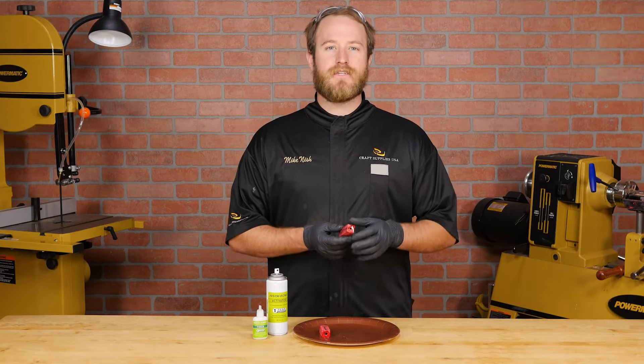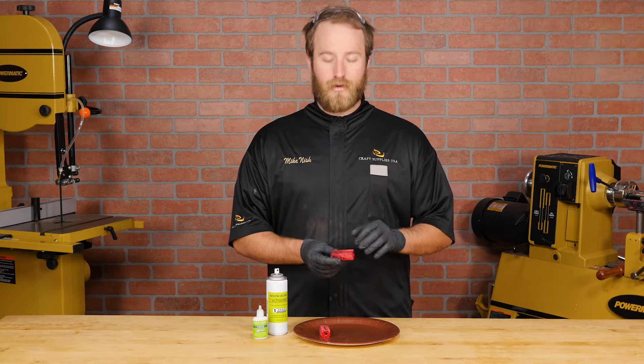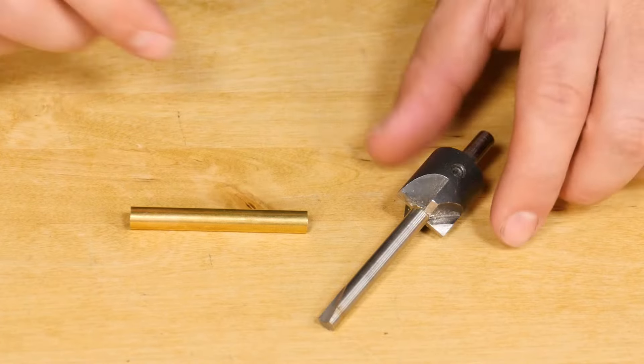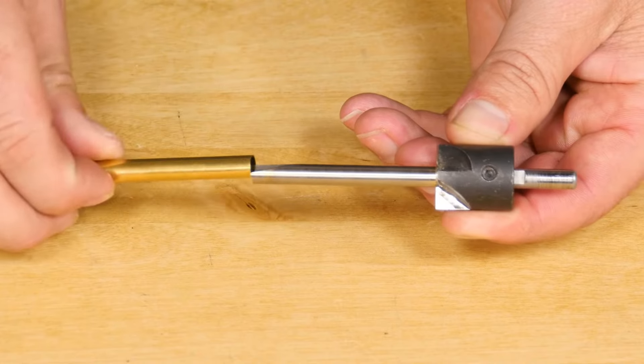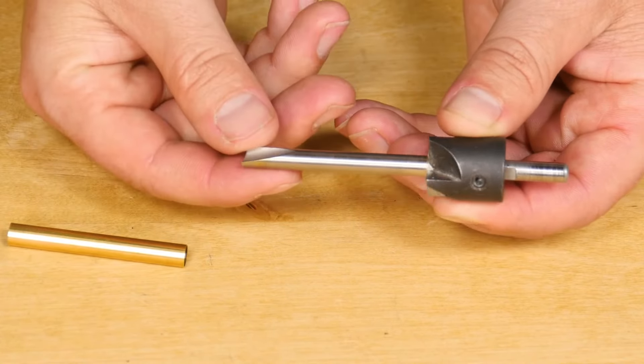After the glue cures, you're going to need to square the ends of the blanks even with the brass tubes. This is critical for the pen components to fit together properly after turning. To make this step easy, we'll use a barrel trimmer, which is a mill mounted on a precisely sized pilot shaft that fits into the brass tube. In this case, we'll be using a barrel trimmer with a 7mm pilot shaft.